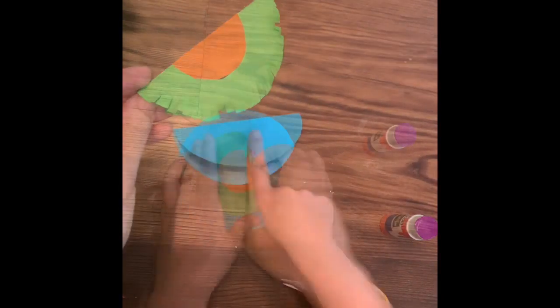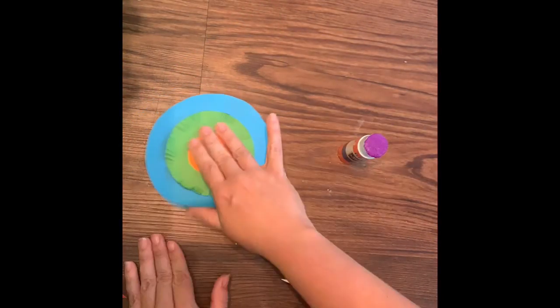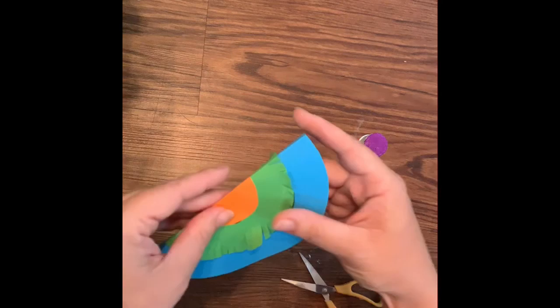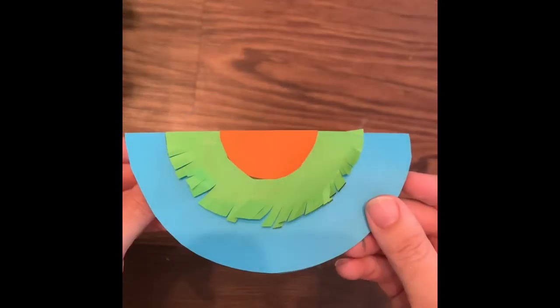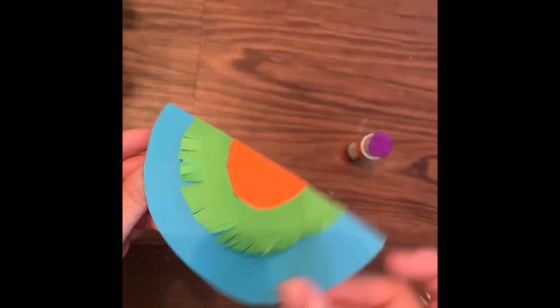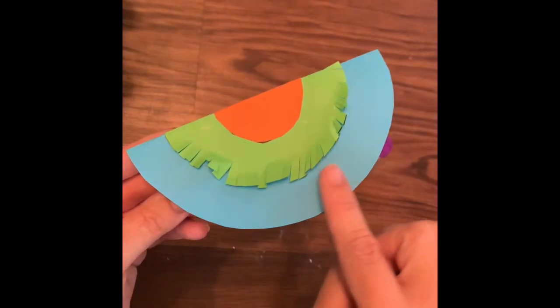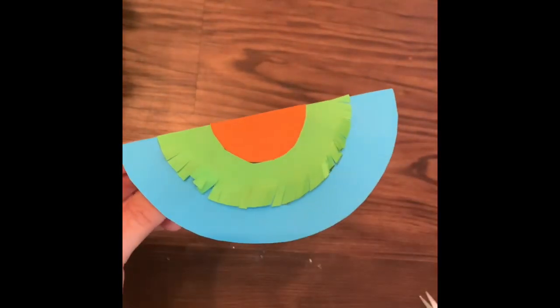Now let's glue this onto here. So far we have the body of the bird done, we have the wing, and then we have a little decorative piece. Let's make the head.